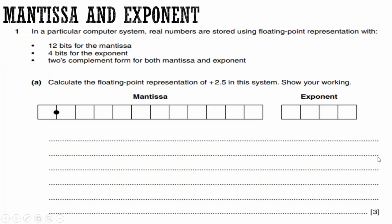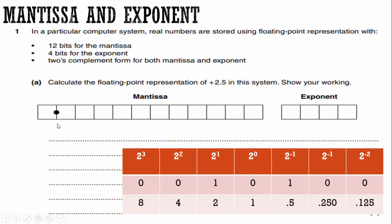Let's take a look at this practice test question. In a particular computer system, real numbers are stored using floating point representation with 12 bits for the mantissa, four bits for the exponent. That has to be given to you. They're usually going to give you boxes. That way it's very easy to know how many bits you're working with. They may or may not tell you two's complement form for both mantissa and exponent. You need to know whether they tell you this or not. It must be in two's complement. So they want us to calculate the floating point representation of 2.5 in this system. And they want us to show our working. Now we're going to go ahead and make it normalized.